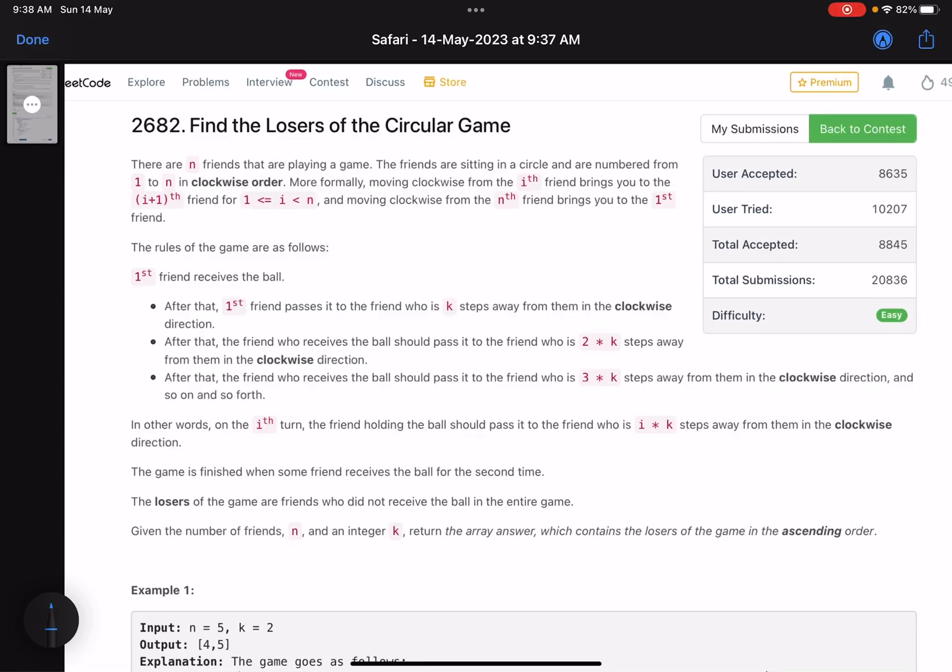Hello everyone, hope you are doing well. In this video we'll discuss the first problem of LeetCode weekly contest 345. It's an easy level problem, but sort of better than other first level problems that you get, as you can see with the accuracy as well. The problem name is Find the Losers of the Circular Game.